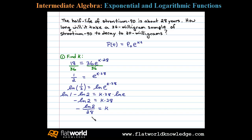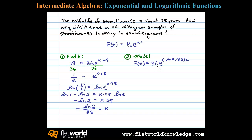Notice that if you calculate this on a calculator you would see a negative result. The next step is to use k and p-naught to construct a mathematical model. The amount of strontium-90 as a function of time equals the initial amount 36 times e to the k, which we just determined is negative natural log of 2 divided by 28, times t.